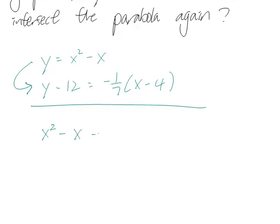And so we have x squared minus x minus 12 equals, I'll multiply this out, minus x over 7 plus 4 over 7.